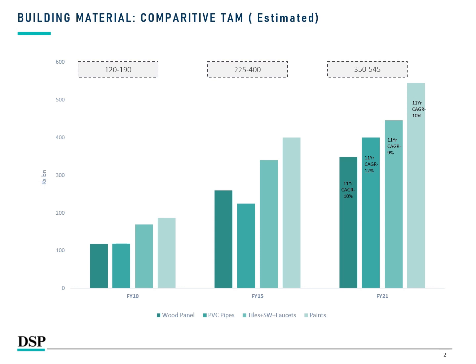Wood Panel is at the lower end of the range at Rs 350 billion. If you look at the last 11-year CAGR growth, broadly you will see that 9-12% CAGR growth is seen in every sub-segment. PVC Pipes' growth is a little bit more at about 12% CAGR. Overall, growth in all the building materials segments has been decent despite a relatively muted real estate cycle in the last 5-6 years.